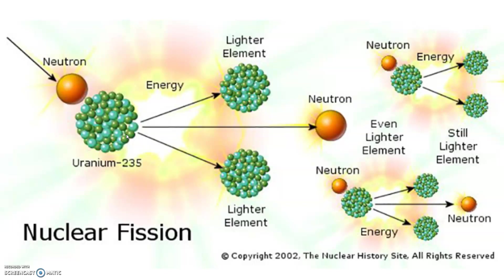Nuclear fission works by throwing a neutron at an unstable atom — mostly uranium-235. Because it's already unstable, being smacked by a neutron causes it to break into pieces. It'll break into lighter elements and also release more neutrons. Those other neutrons are going to smack into other uranium molecules and create a chain reaction.